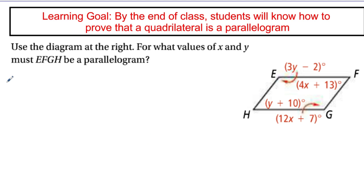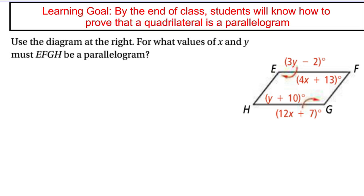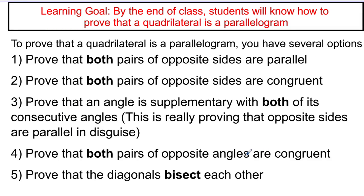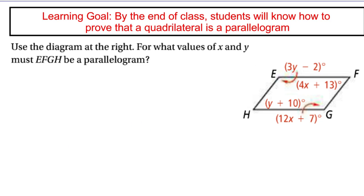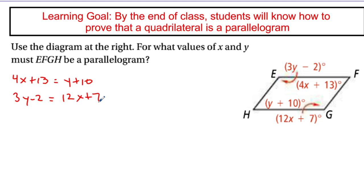Here's a similar example, but now we're given angles. Looking back at the list, properties 3 and 4 deal with angles. I could prove that an angle is supplementary with both consecutive angles, or prove that both pairs of opposite angles are congruent. Looking at opposite angles, I'd set 4x plus 13 equal to y plus 10, and 3y minus 2 equal to 12x plus 7 — that's a system I could solve, but it's a lot of work.